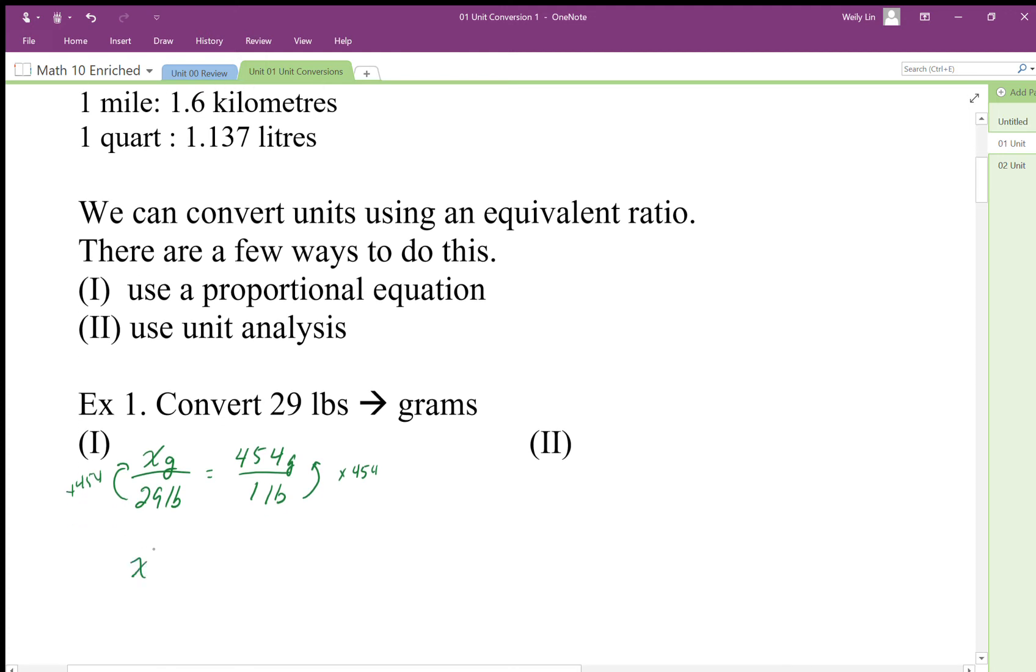That's one way we can do it. The unit analysis is another way we're going to do this. We're going to first start off with 29 pounds, and we're going to multiply by that rate.